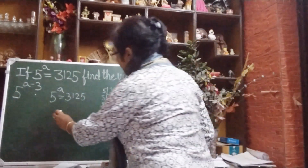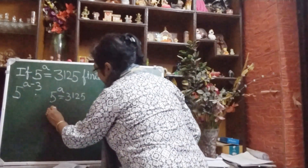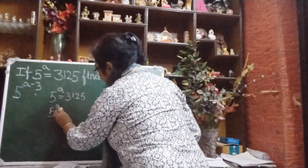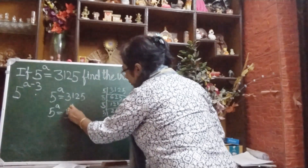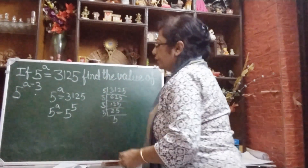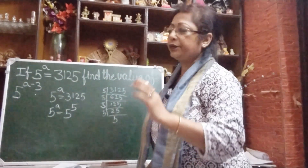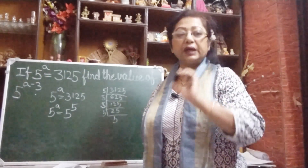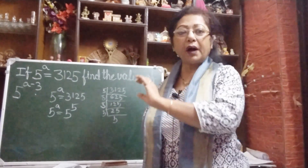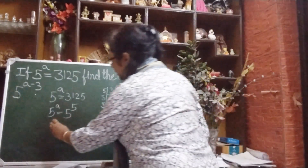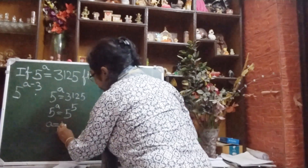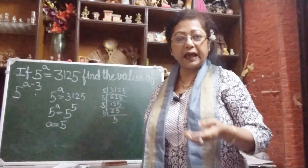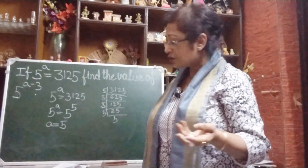So we can write 5 to the power a equals 5 to the power 5. Now, when the bases are same, we can write the powers are equal. That means a equals 5. So we got the value of a: a equals 5.